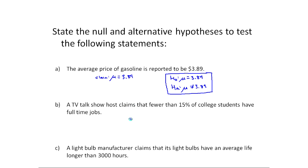Let's take a look at B. A TV talk show host claims that fewer than 15% of college students have full-time jobs. This time the claim is about a percentage, right? So the population percentage is represented by pi in the textbook, but usually more commonly it's represented by P. The claim is that P is less than 0.15.